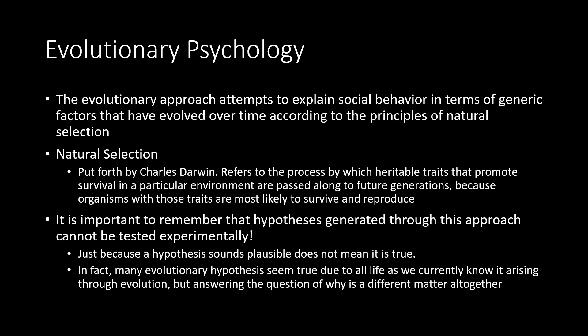It is also important to remember that hypotheses generated through this approach cannot be tested experimentally. You cannot go back in time and change different types of genes or environmental contexts of our historical ancestors — it is something that cannot be done, as far as our current science would allow us to believe. Just because hypotheses derived from evolutionary psychology seem very plausible, like a giraffe reaching to the top leaves to get their food, does not mean they are true. In fact, many evolutionary hypotheses seem true due to the fact that all life as we currently know it arose through evolution. Answering the question of why is a different matter altogether, because we cannot test it experimentally.